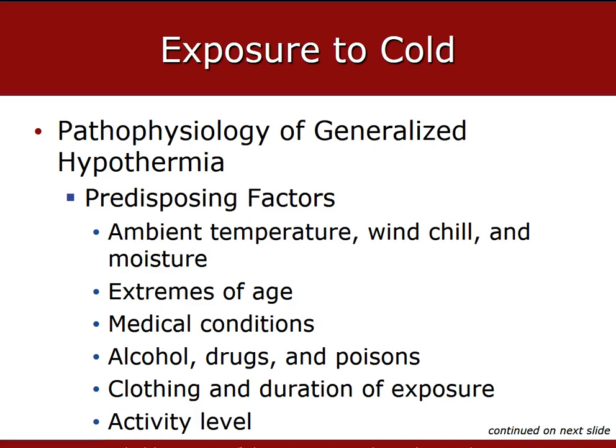Hypothermia can occur in temperatures as high as 65 degrees Fahrenheit, depending on the wind chill factor. People at the extremes of age — infants, especially newborns, toddlers, and the elderly — are at the highest increased risk. People who have had recent surgery, shock, head injuries, burns, generalized infections, spinal cord injuries, thyroid gland disorders, and diabetics are also at very high risk for hypothermia. Some drugs, alcohol, and poisons can increase the risk of hypothermia as well. The longer a person spends unprotected in a cold environment, the greater the chance they will become hypothermic.